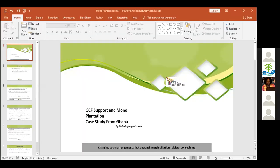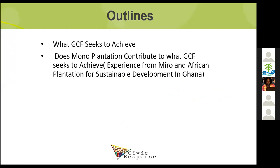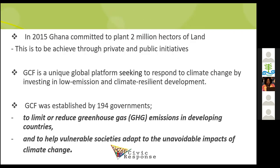Good afternoon. I'm from CEREC Response in Ghana — the Secretariat for Forest Wars Ghana. This presentation will look at GCF support for mono plantations, using a case study from Ghana. We'll look at what the GCF seeks to do based on its own statements, and try to see whether what is happening in Ghana — especially in terms of mono plantations — actually contributes to what the GCF seeks to achieve. Around 2015, the Ghana government made a commitment to plant 2 million hectares of land as part of its AFR100 commitments.